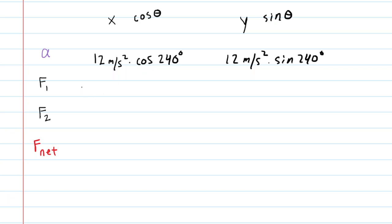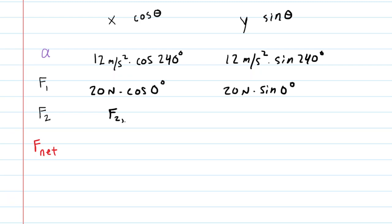For F1, the angle was zero and the magnitude was 20 newtons. So the x component is 20 newtons times the cosine of zero degrees, and the y component is 20 newtons times the sine of zero degrees. For F2, we don't know that — this is the tricky part of the question. So for now, we'll fill in F2x to represent the x component of F2, and F2y for the y component.